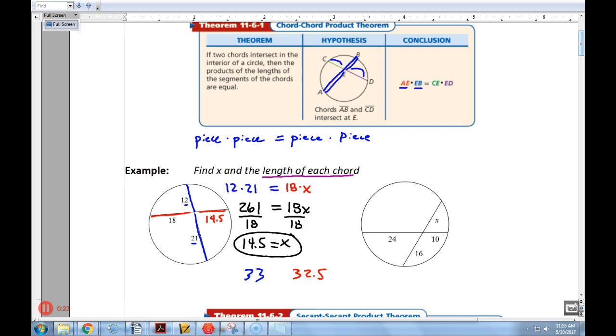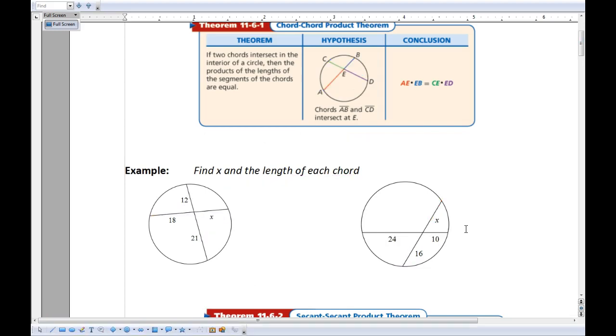All right, let's go to the next example over here. We have 24 times 10 should equal 16 times x. So that's 240 equals 16x. Divide both sides by 16. And I believe that's going to go in there 15 times. So x is 15. And now when I go ahead and I work this one out, the blue chord here is 34, and the red chord here would have a length of 31. So again, notice the chords are not the same length, but the product of their segments is equal. When you multiply the segments together, they are equal. All right, so that's the chord chord.